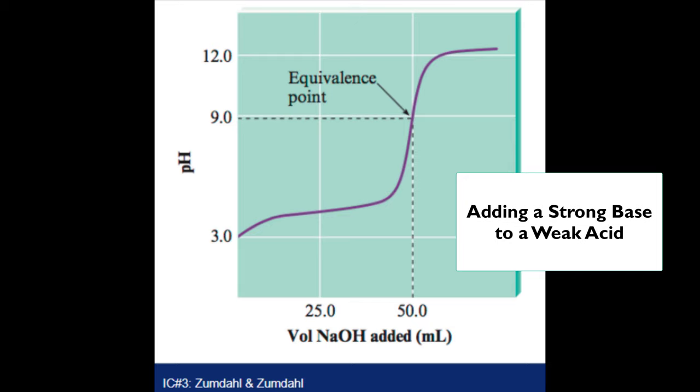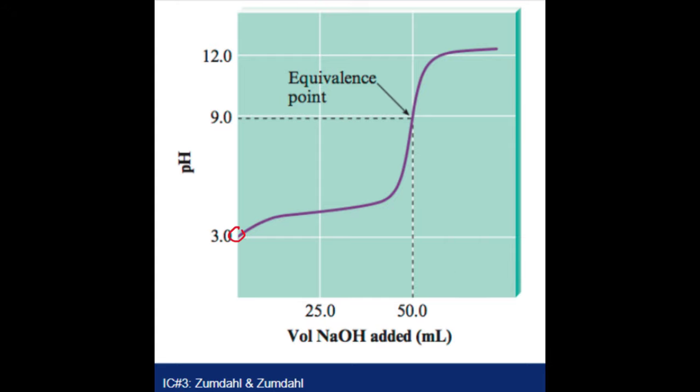The story is much more interesting when you mix a strong base with a weak acid. You'll see here that you're starting out with a very low pH, but not as low as you had with a strong acid. So this is the pH of just the acid by itself. And then as we add the base, you can see that the pH starts to rise, because you're adding a strong base to a weak acid. But the interesting thing to me is that the pH then levels off a little bit.